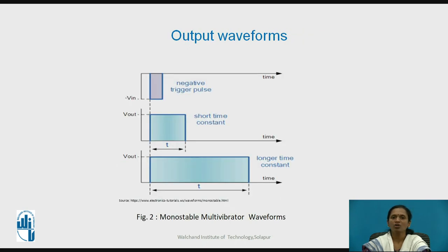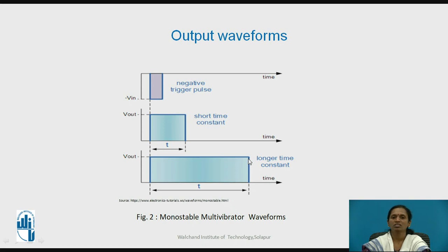Have a look at the output waveforms of the monostable multivibrator. This is the negative trigger pulse applied at the base of Q2, and due to that you will reach the quasi-stable state of logic 1. If the value of R and C is less, you will get a short time constant signal. If you have a larger value of R and C, you will get a longer duration pulse — that is, a logic 1 signal.